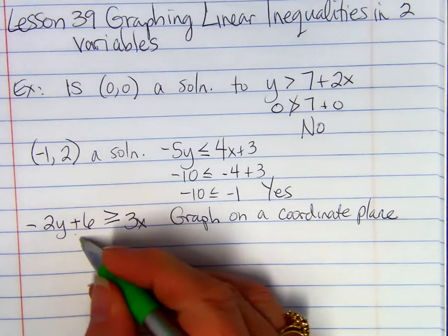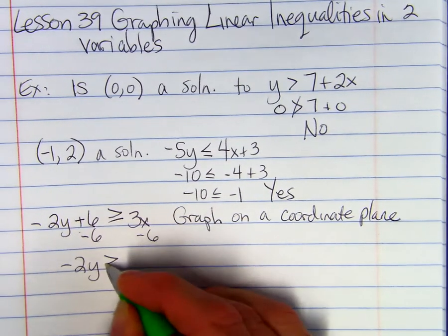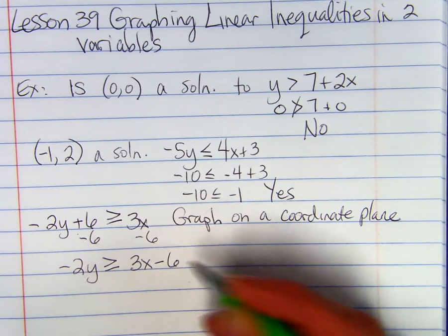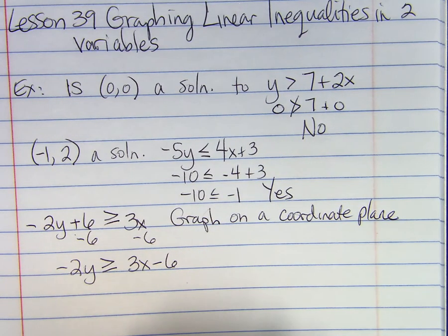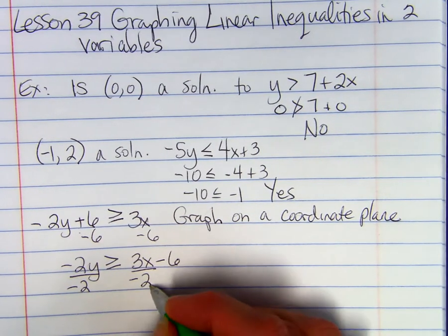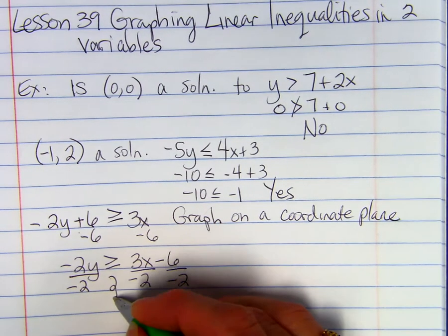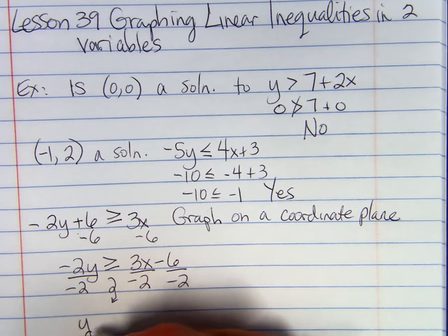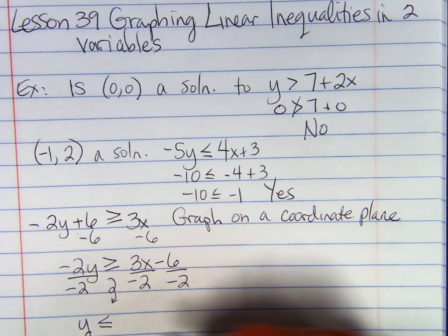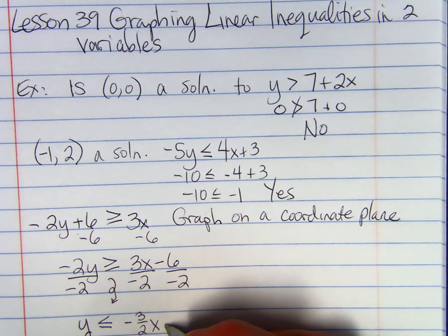So we solve for y. We're going to subtract 6 from both sides and get negative 2y is greater than or equal to 3x minus 6. Then we're going to divide by a negative 2. When you divide by a negative, your sign has to flip around. So you have y is less than or equal to negative 3 halves x plus 3.